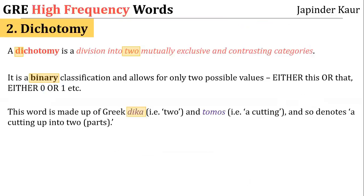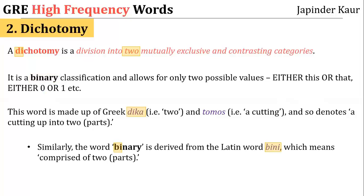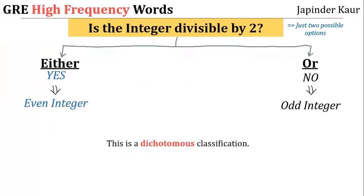The other root word here is tomos, which means cutting. So the word dichotomy denotes a cutting up into two parts. Now, I said binary classification while defining the word dichotomy. Just like the Greek word dika means two, the root word for binary is the Latin word bini, which means comprised of two parts.